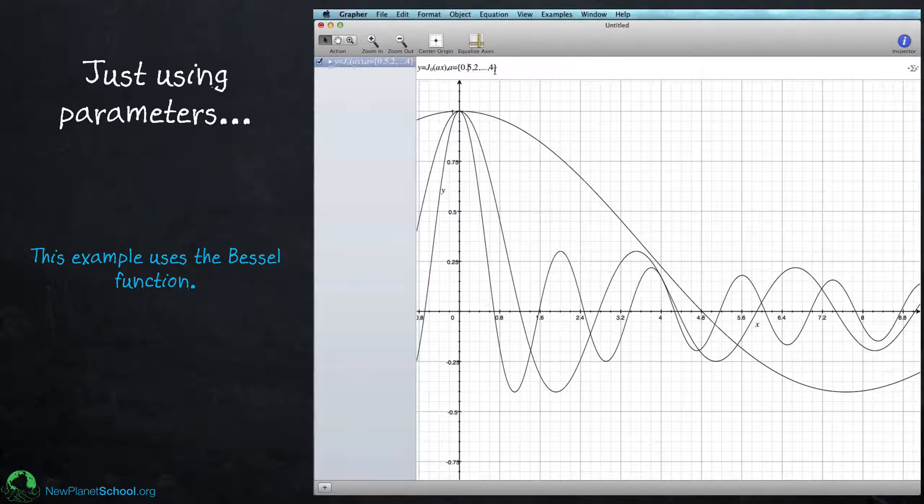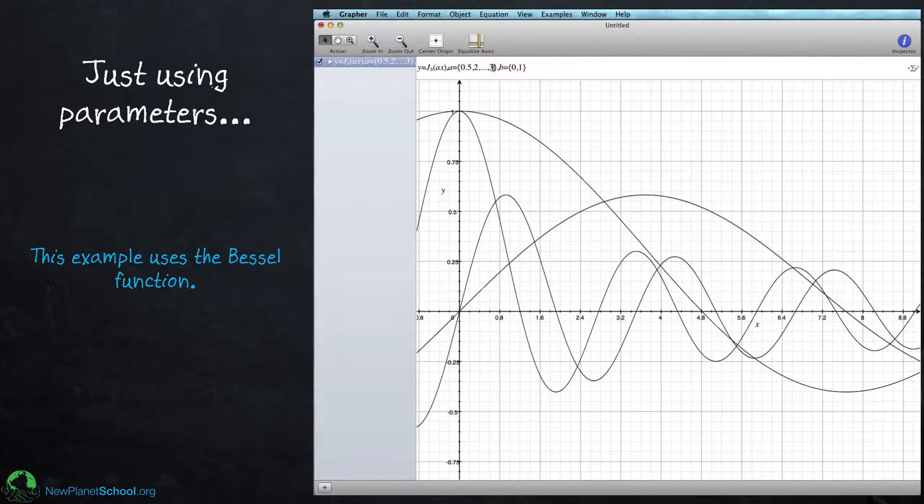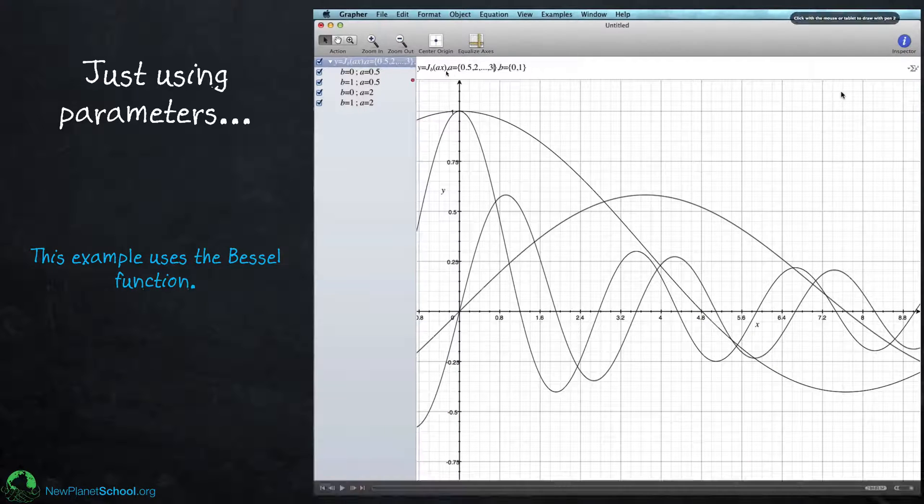The other thing that it allows for in this mode is two parameters. So let's say I make a B here. I can set another set of parameters here, 0 and 1, and I get two families of curves. So I get two sets of Bessel functions with the parameter A varying over a wide range. You can click on the down arrow and see these are the different B and A combinations that it's using. So that's how to do parameters.